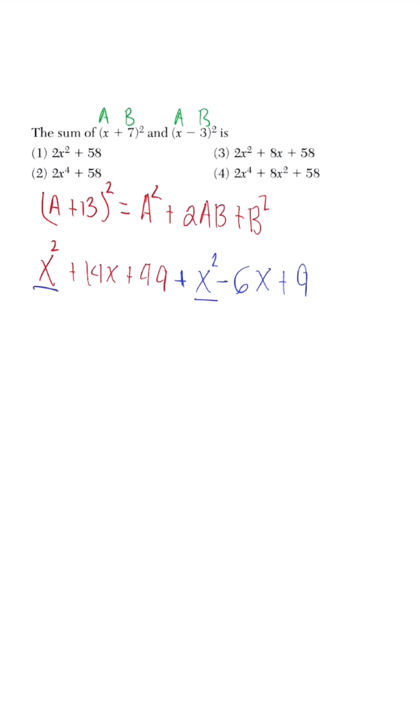So now all we need to do because we're talking about the sum is just add. So X squared and X squared, that gives me two X squared. Positive 14 plus a negative six, that's going to give me a positive eight X.